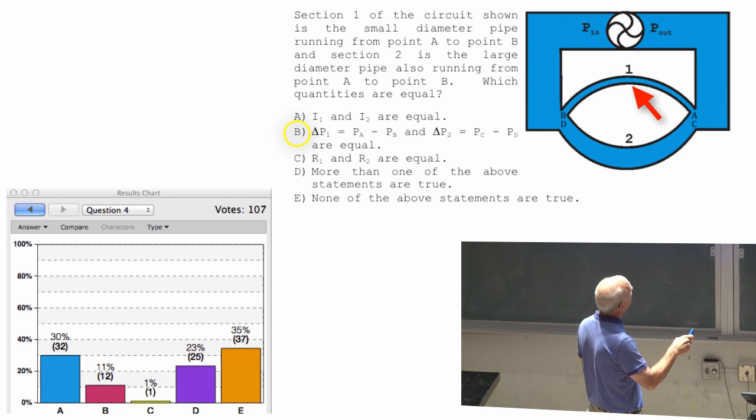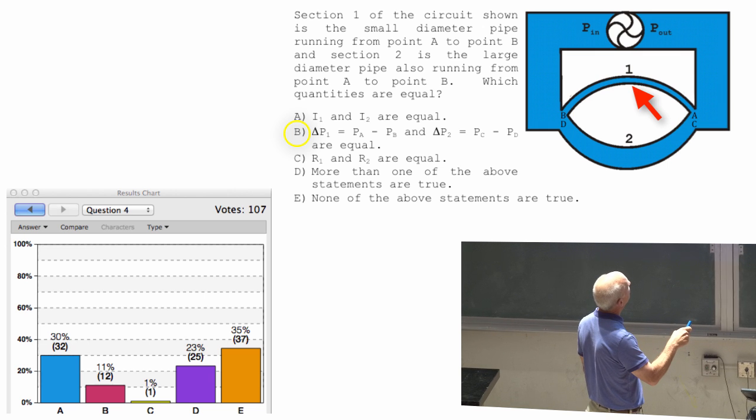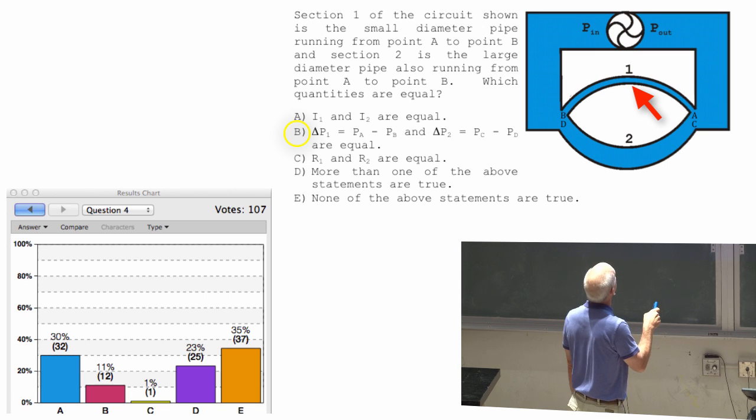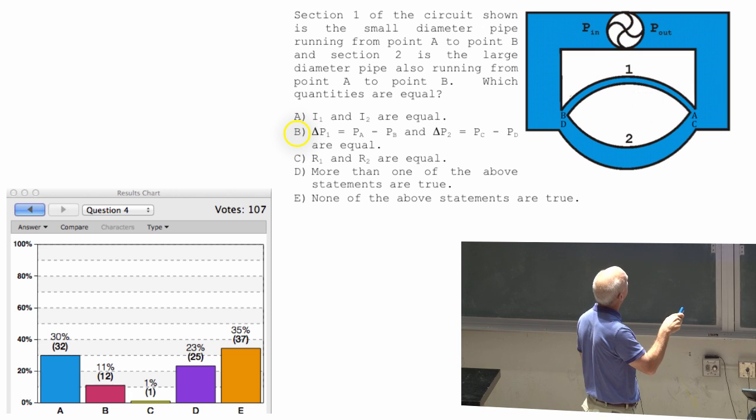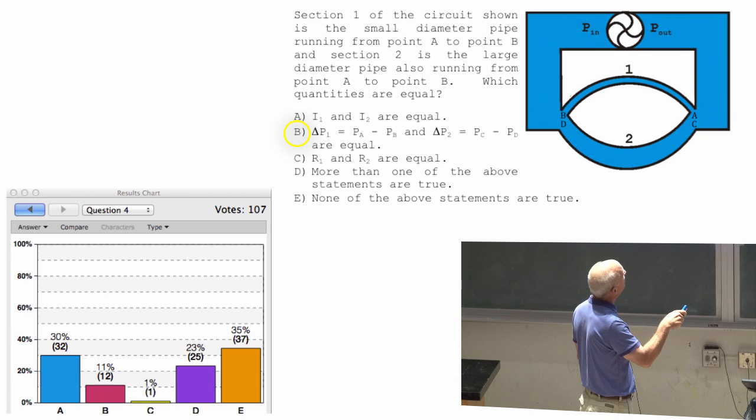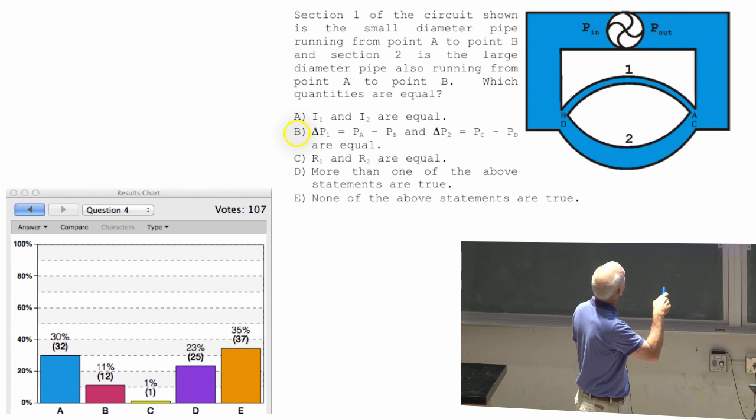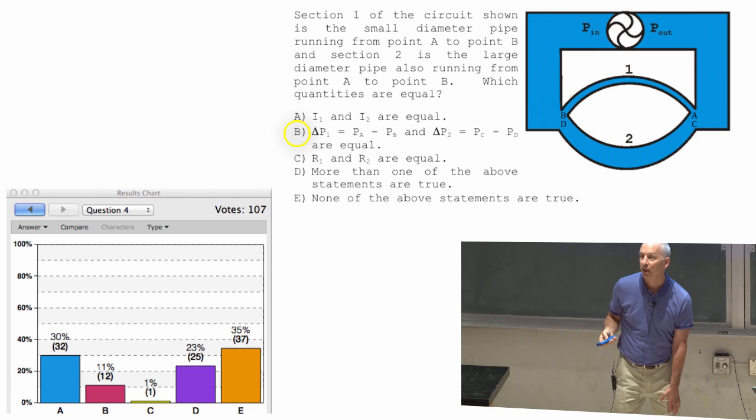Again, this is a much smaller cross section pipe. So I would expect that to have the higher resistance. I wouldn't expect R one and R two to be equal. So if the resistances are different, but the pressure drops are the same, then it's going to turn out that the currents are different.